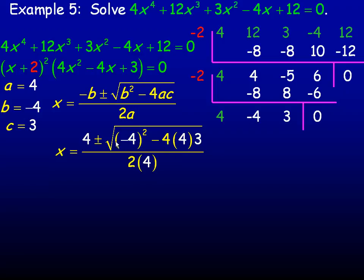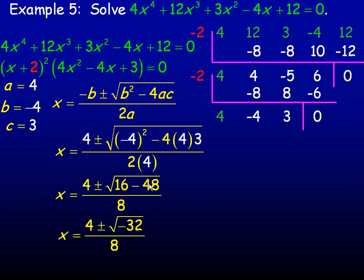And so simplifying all that, underneath the radical, negative 4 squared is 16, and 4 times 4 times 3 is 48. So 16 minus 48. Notice there's a problem here. Well, not really a problem, but 16 minus 48 is negative 32. And we have a negative value underneath the radical.